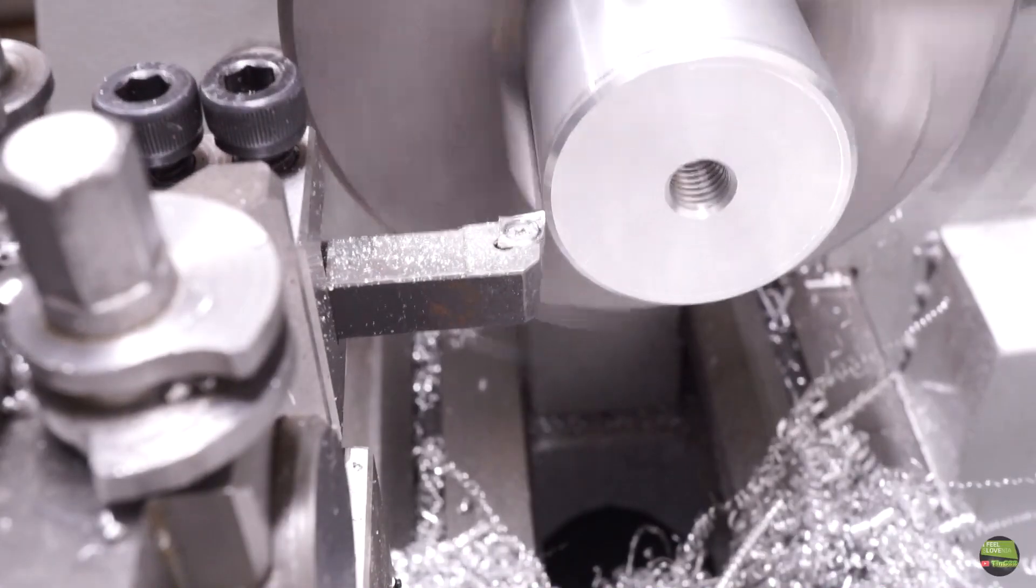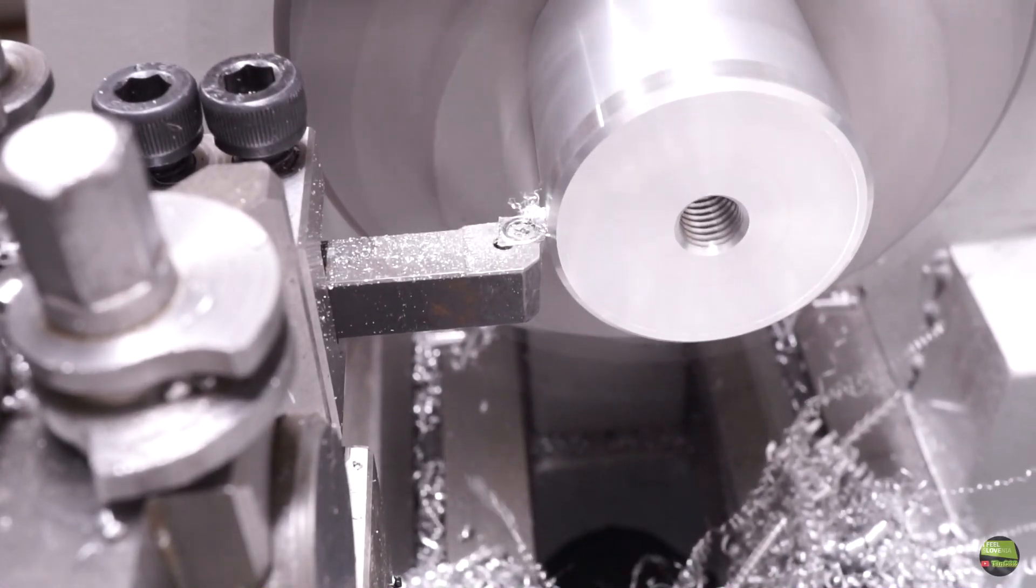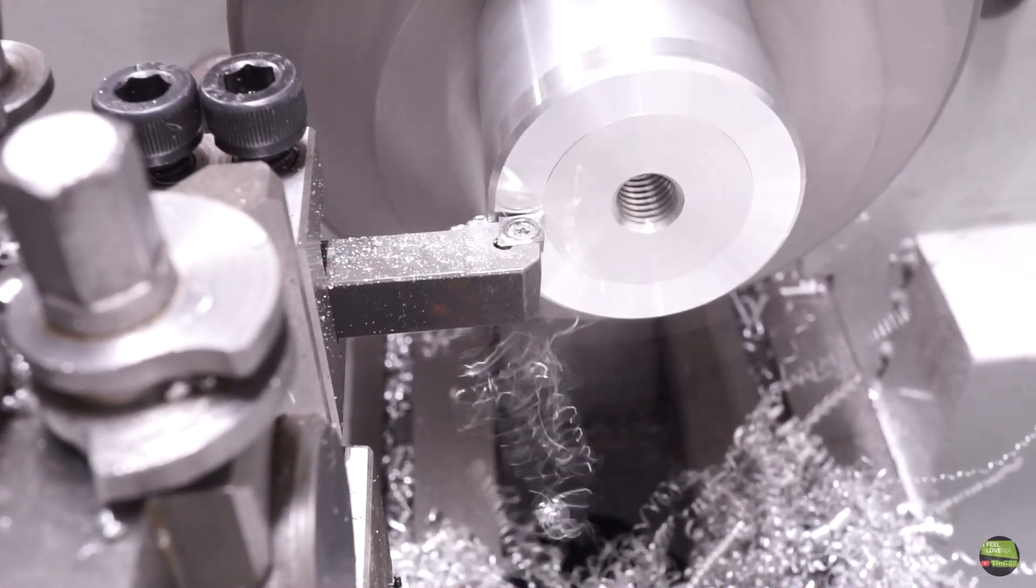Now I need to do some more turning and chamfering from the backside and then prepare the dividing table to make kicks for the wrench, so I can tie it as it should be.